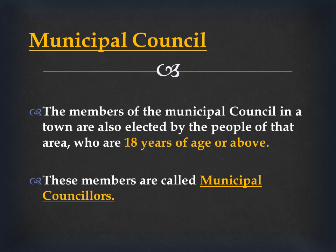The members of the municipal council in a town are elected by the people of that area who are 18 years of age or above. To elect the members for the municipal council, the people's age should be 18 years and above. The elected members of the municipal council are called municipal councilors — spelled M-U-N-I-C-I-P-A-L C-O-U-N-C-I-L-L-O-R-S.